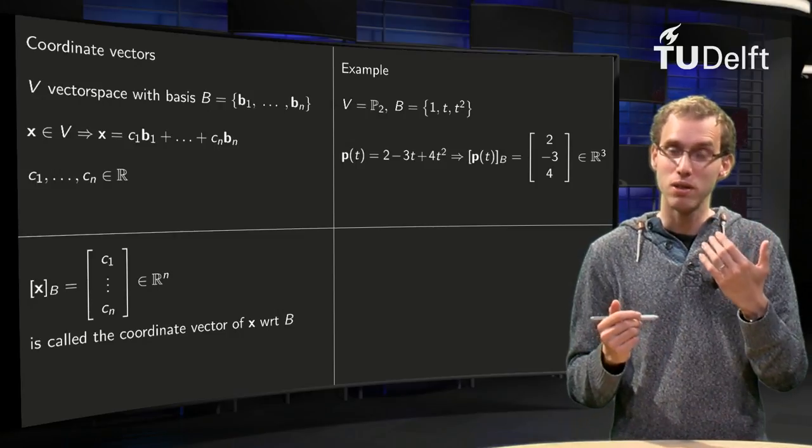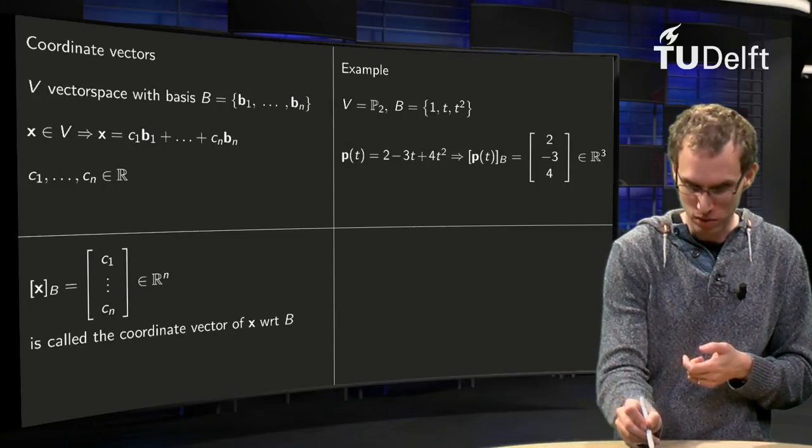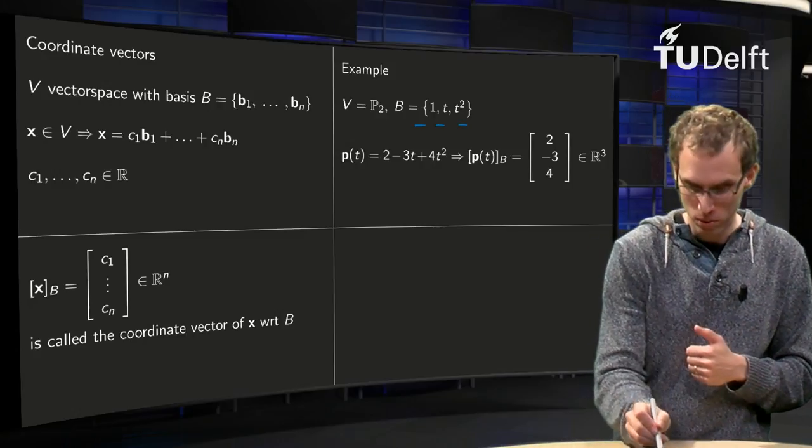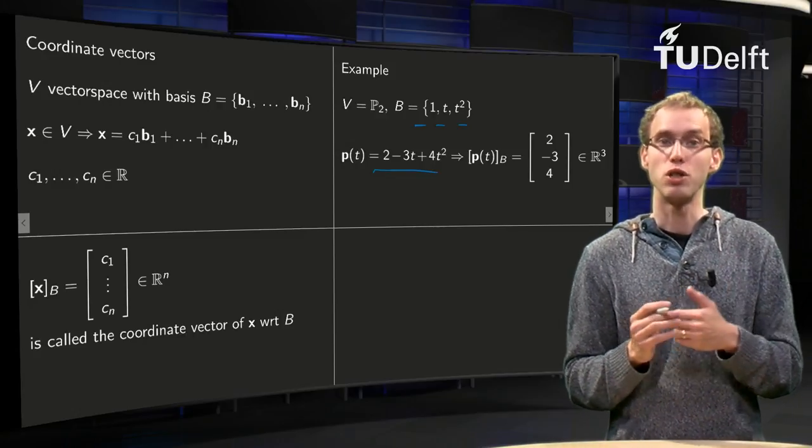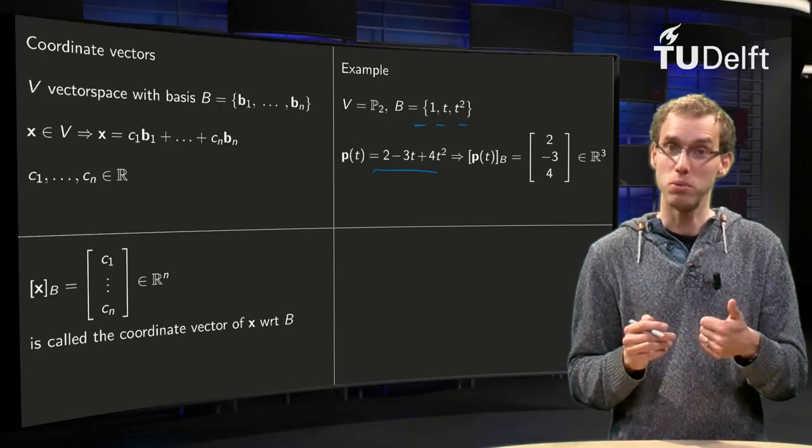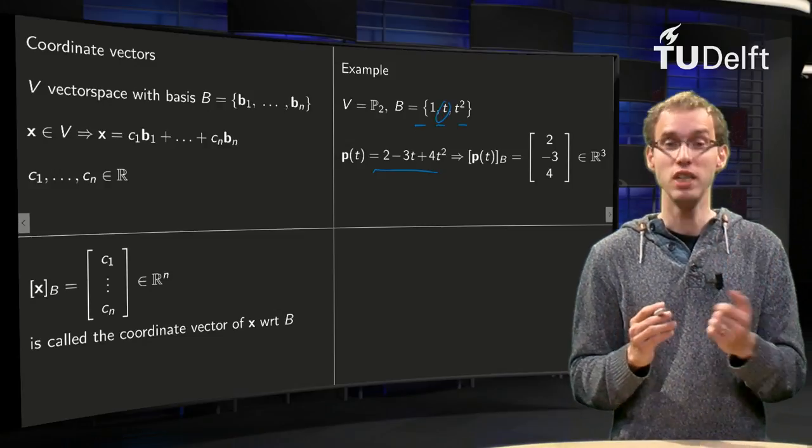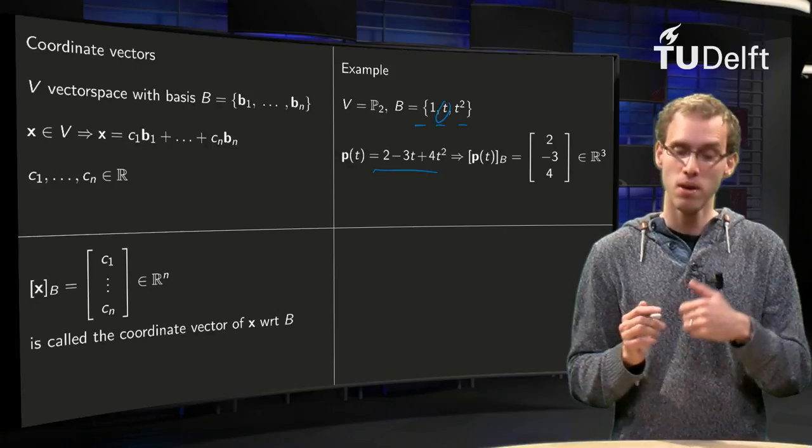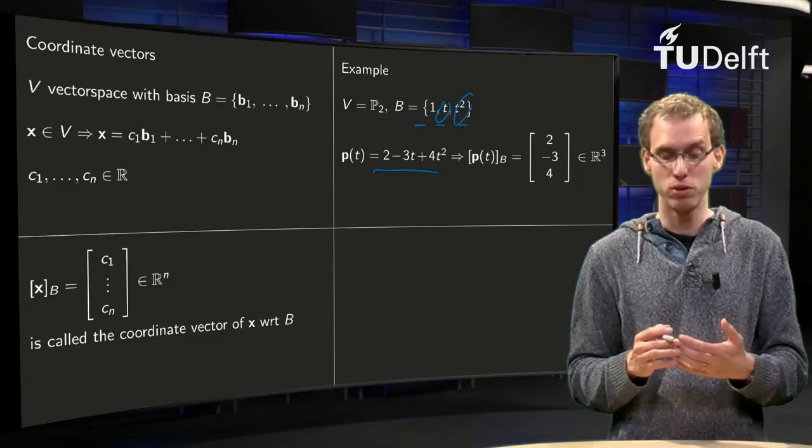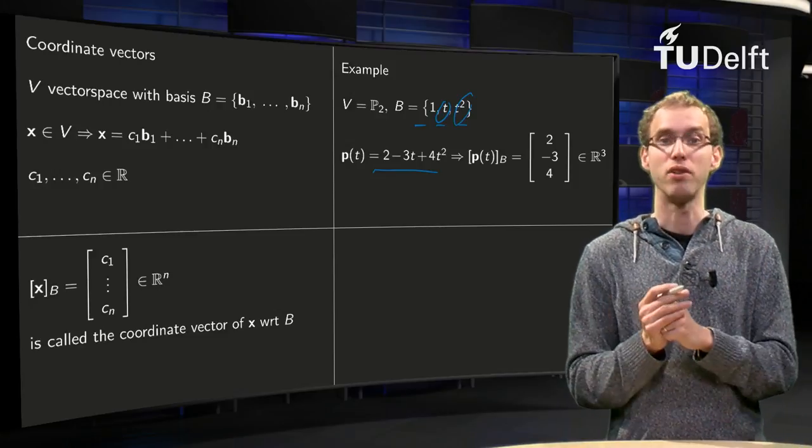The coordinate vector contains the weight which I need to put in front of the basis vectors 1, t, and t squared in order to get my polynomial 2 - 3t + 4t². So what weights do I have? I have 2 times 1 first basis vector, minus 3 times t plus 4 times t squared third basis vector. So my coordinate vector will just be 2, -3, 4, a vector in R³.